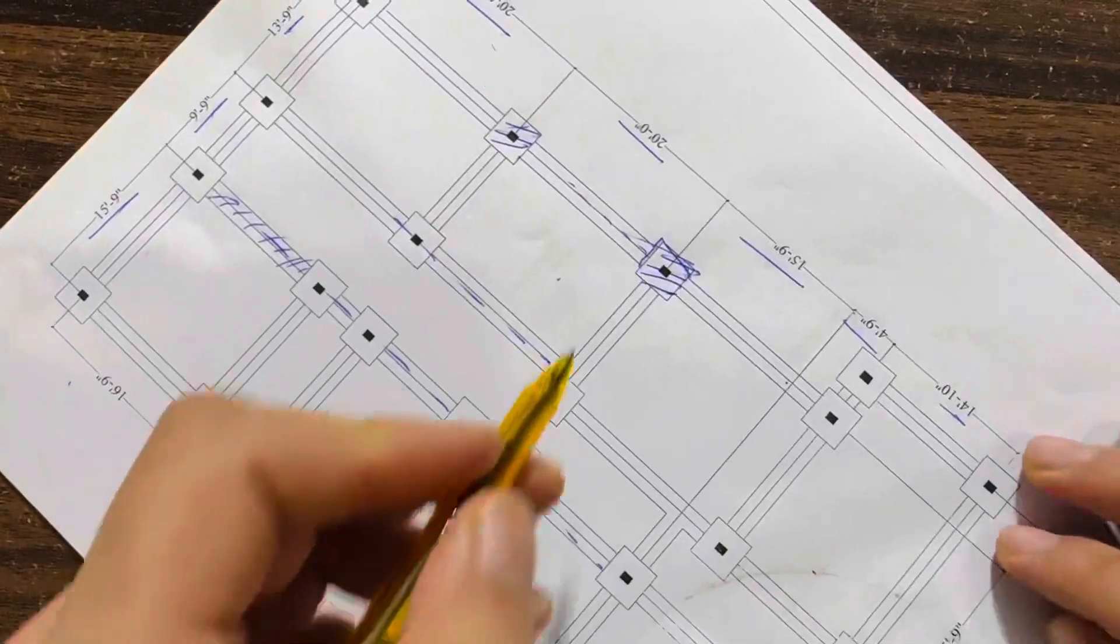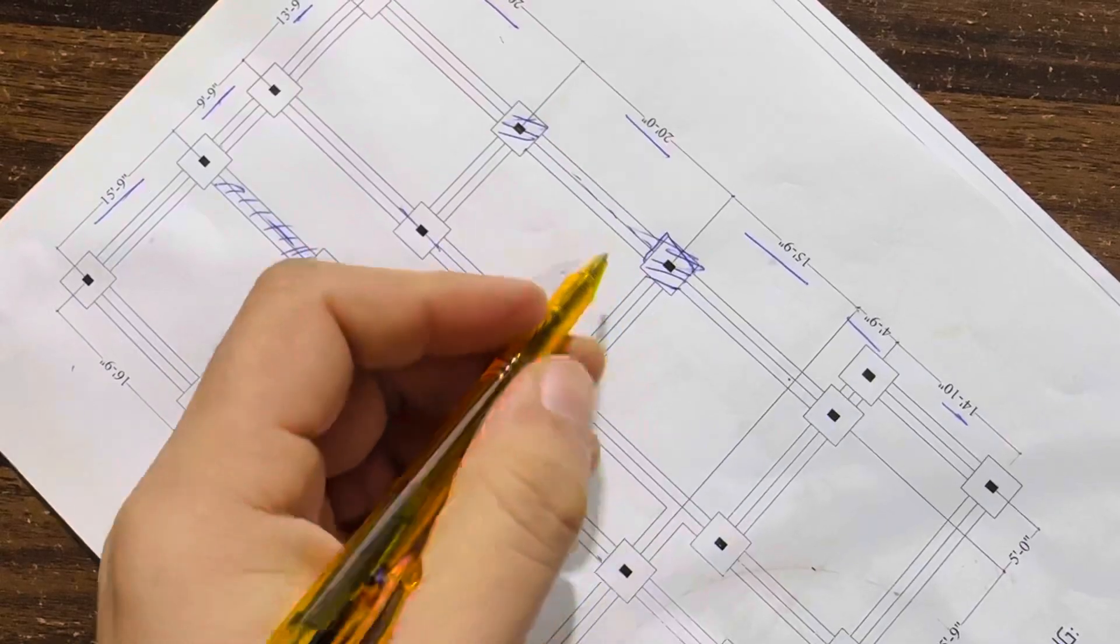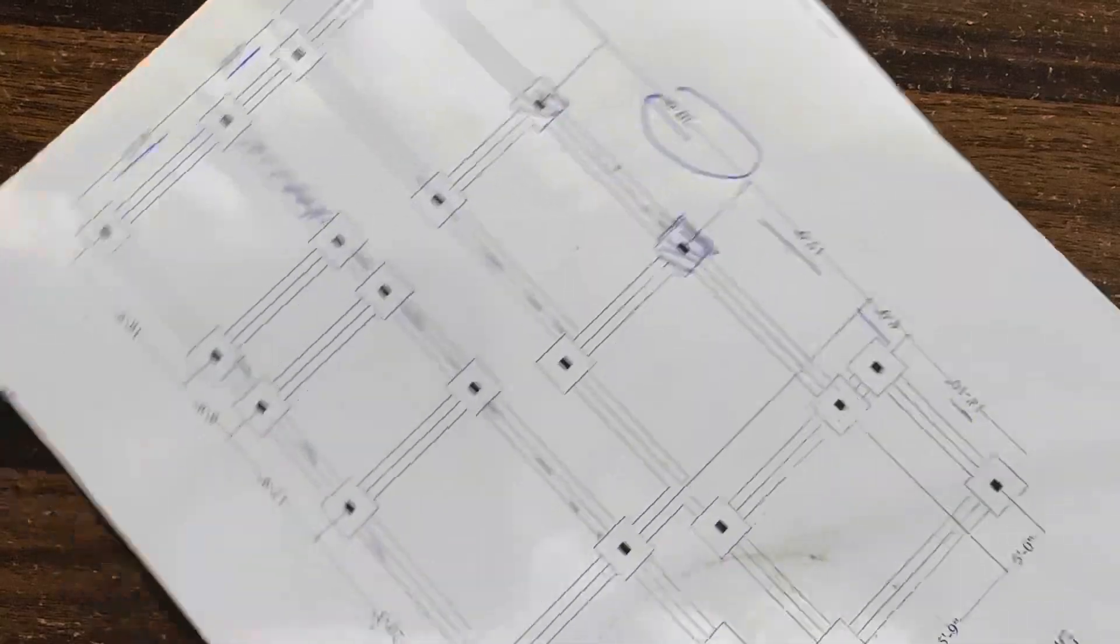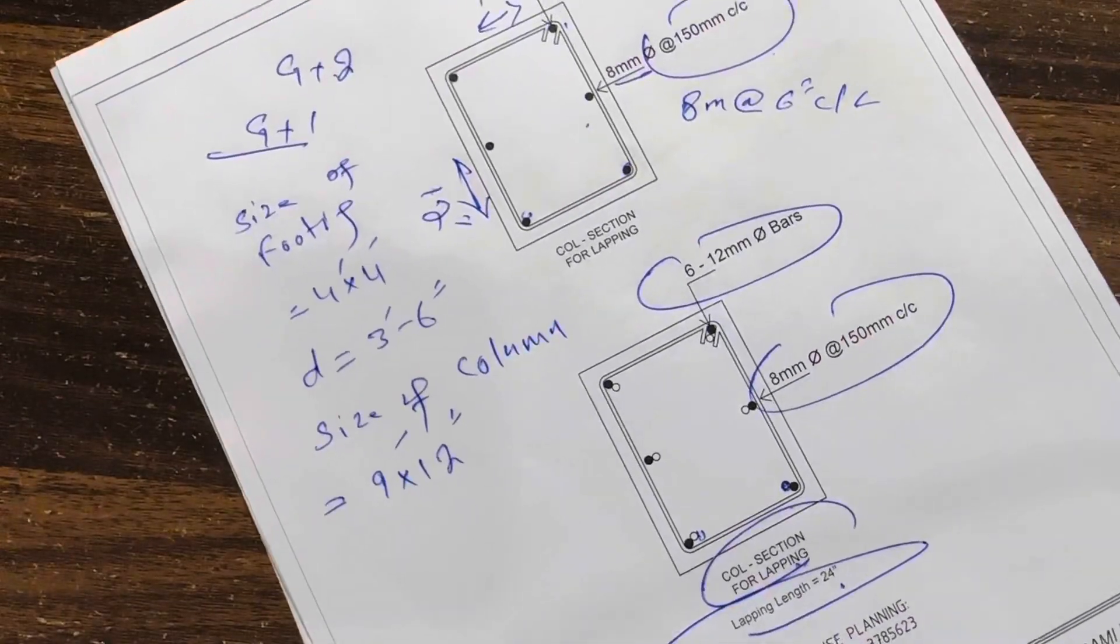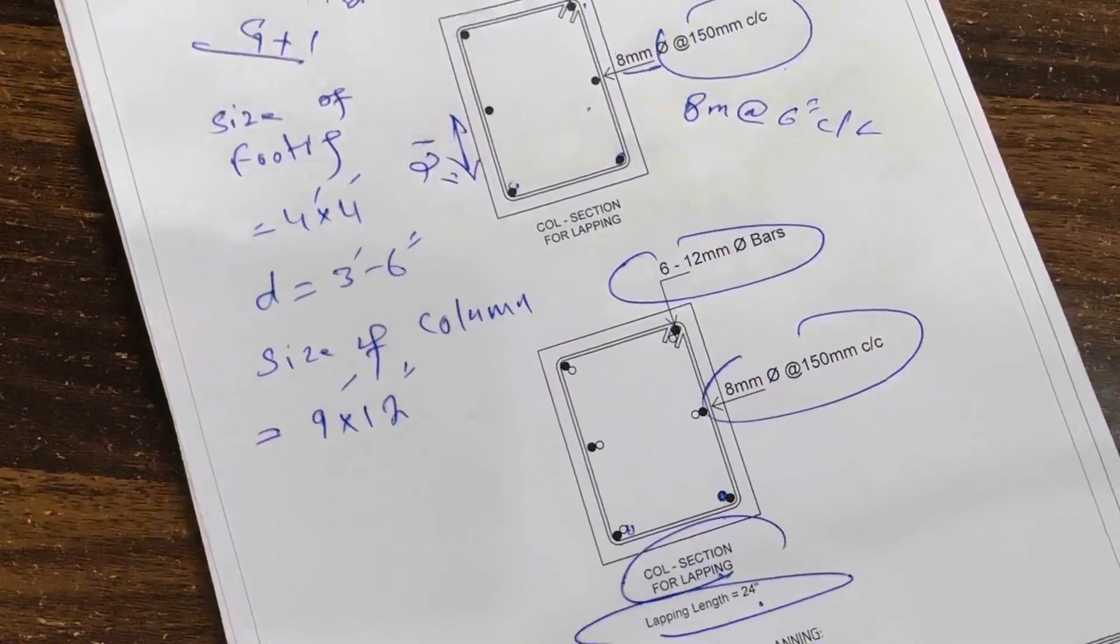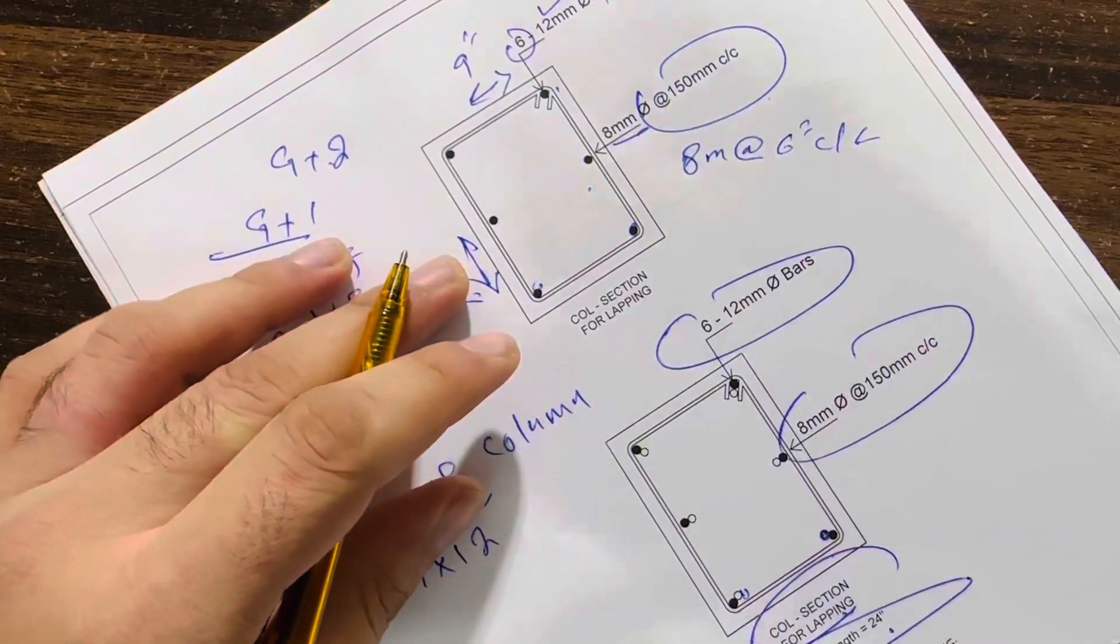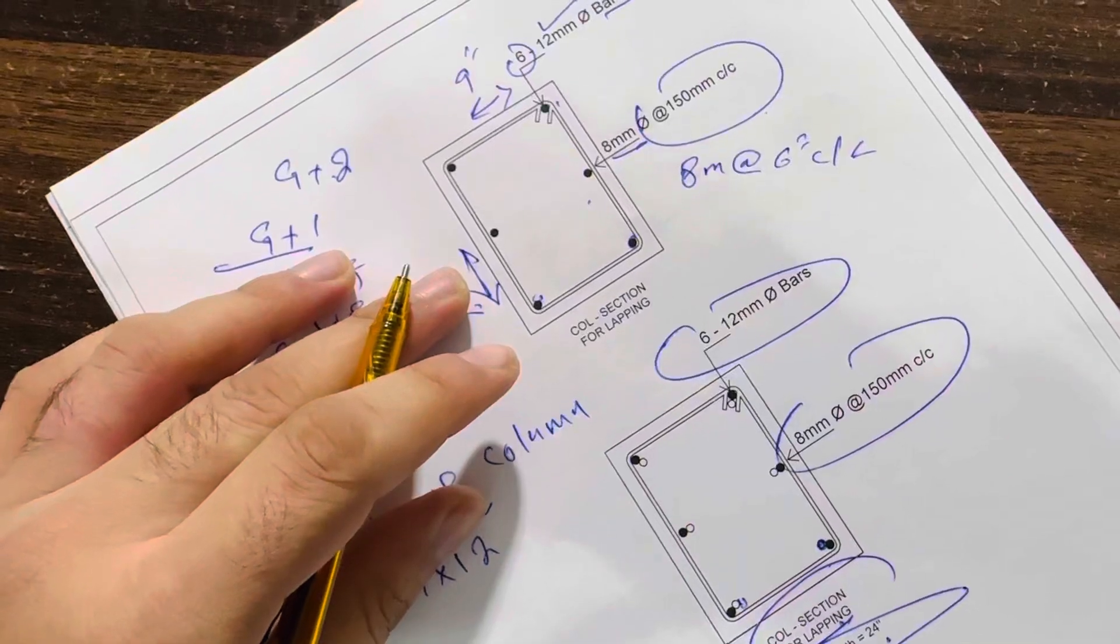These are footings, size I already discussed. Maximum span is here 20 feet. This is a short video in which I guided you for size of footing, layout plan for the footing, inside column, and column safe structure design. Thanks for watching. See you in next video. Goodbye.